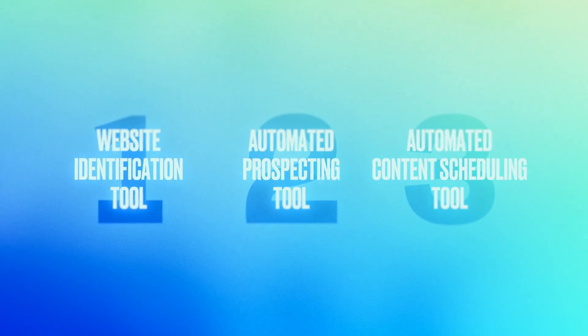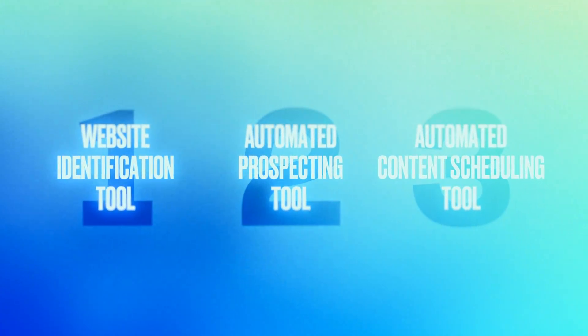To recap, if I had extra time and had to start another software company, it would be a website identification tool, an automated prospecting tool, or an automated content scheduling tool with AI to help come up with ideas. I hope this gave you not only some ideas but also an understanding of the types of ideas I look for, so you can find other similar ones. If you want my team to build any of these for you and help you grow it, I'll put the link in the description to work with my venture studio. Subscribe to the channel and I'll catch you in the next one.